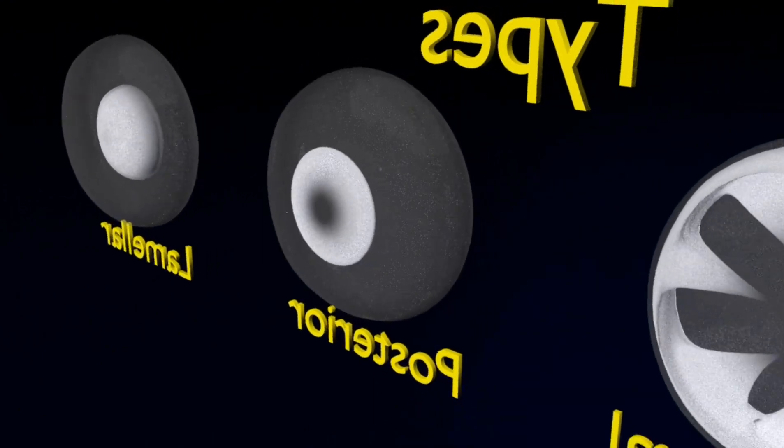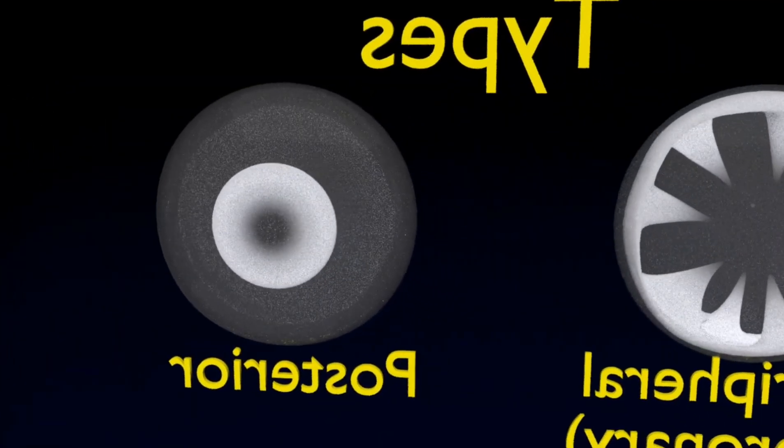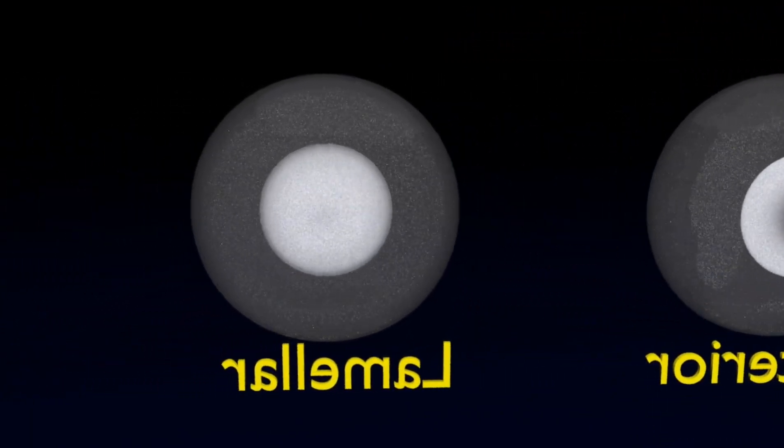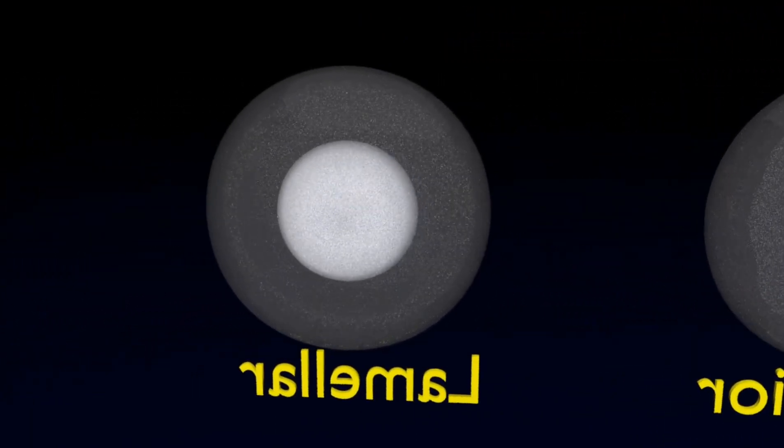The laminar cortical cataract: The opacity involves the whole part of the lens cortex except the cortical part anterior to the nucleus.